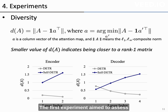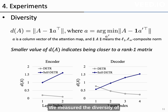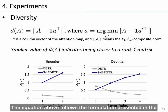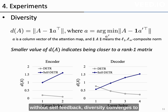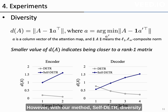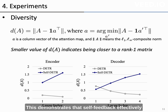The first experiment aimed to assess how much the temporal collapse issue was alleviated. We measured the diversity of the self-attention map for each layer. The equation above follows the formulation presented in the previously mentioned ICML paper. Using this equation, as the DA value converges to 0, it becomes close to a rank-1 matrix. As shown in the baseline without our self-feedback, diversity converges to 0 over layers, indicating severe collapse. However, with our method of self-feedback, diversity is maintained and even increases over layers. This demonstrates that self-feedback effectively addresses the temporal collapse problem.